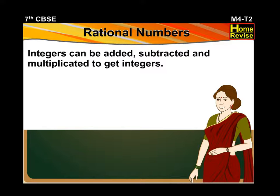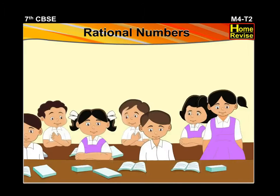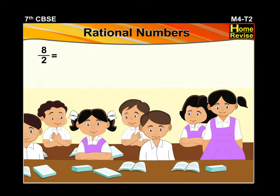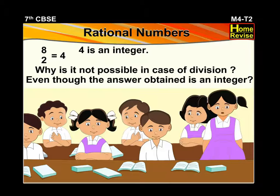But students, note that this cannot always be true in case of division. A student asks: why is it not possible in case of division? Suppose I take the example 8 divided by 2 — it is equal to 4, and 4 is an integer. Then why is it not possible in case of division, even though the answer obtained is an integer?